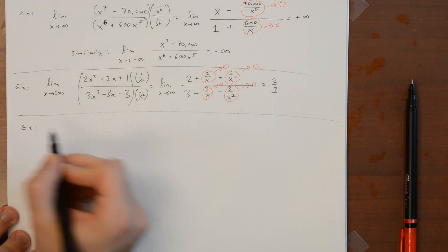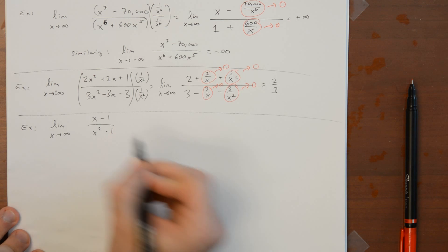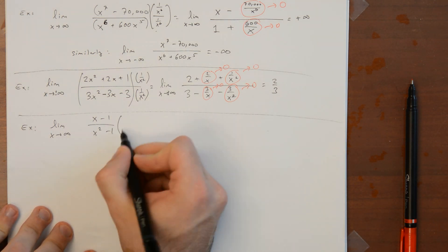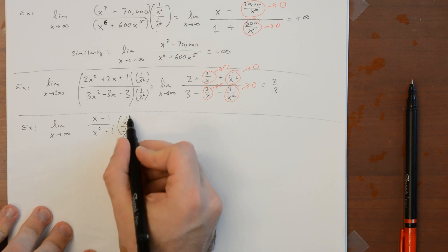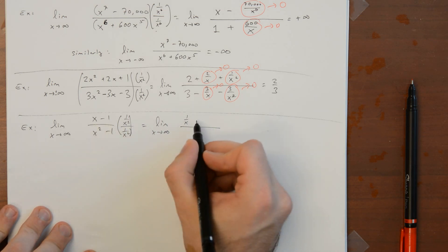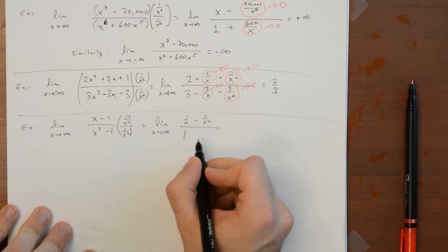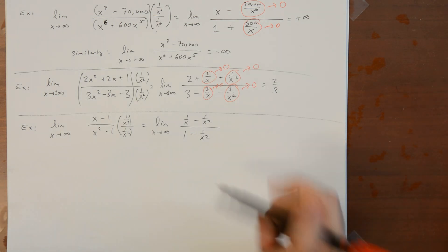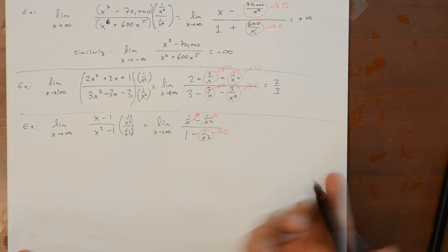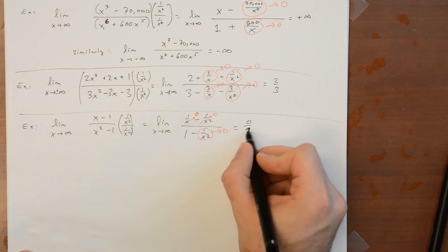One last example: the limit as x goes to infinity of x minus 1, over x squared minus 1. We divide by the highest power of x in the denominator, which is x squared. So x times 1/x² = 1/x, negative 1 times 1/x² = −1/x², x² times 1/x² = 1, and minus 1 times 1/x² = −1/x². The denominator approaches 1, and the numerator approaches 0. By the limit laws, since the denominator approaches a non-zero value, the limit of the quotient is just 0 over 1, which is 0.